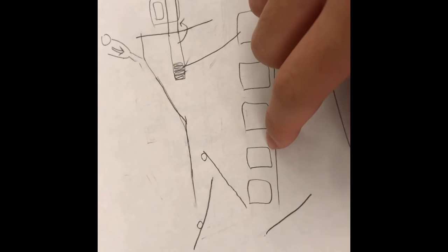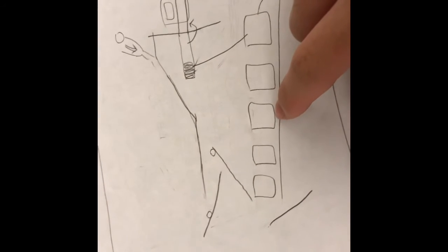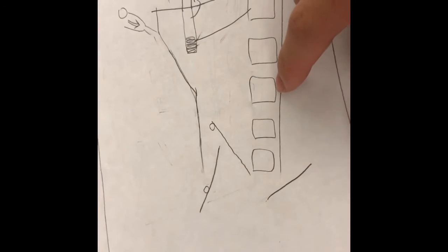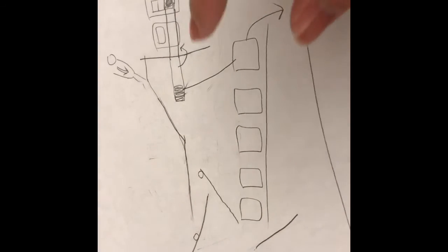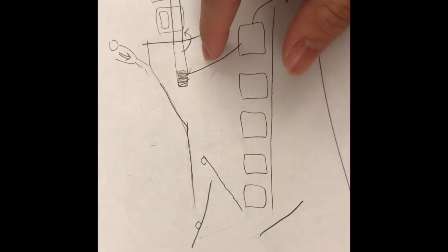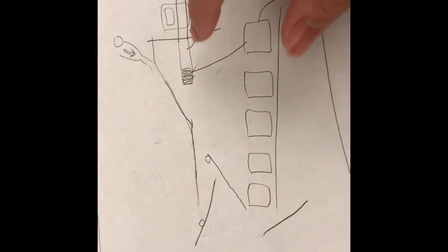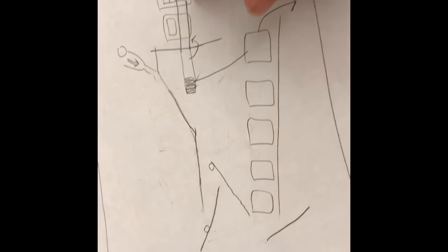When it reaches this, this should fall down with a string attached to it. So if it falls in the right direction, this should rotate to here and hit the light switch.